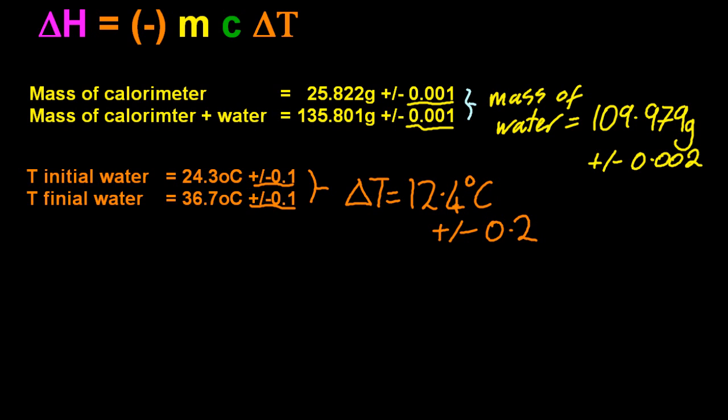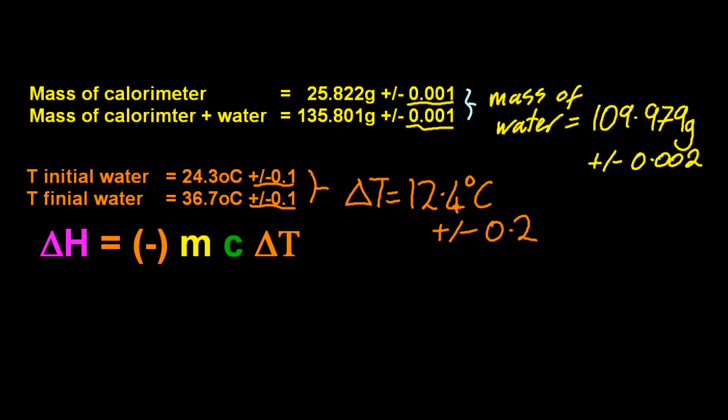And for the change in temperature, the uncertainties, again add the uncertainties, and that gives you delta T, the temperature change of what you heated. C is the specific heat capacity of water, that's in the data booklet. So let's do this calculation.